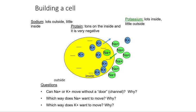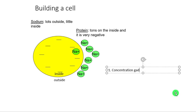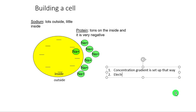If we go back to this picture: which way does sodium want to move? From out to in. Why does he want to move from out to in? The reason is twofold. Number one, because his concentration gradient is set up that way. Number two, I'm going to introduce a new concept: the electrical gradient. The electrical gradient is also set up that way.